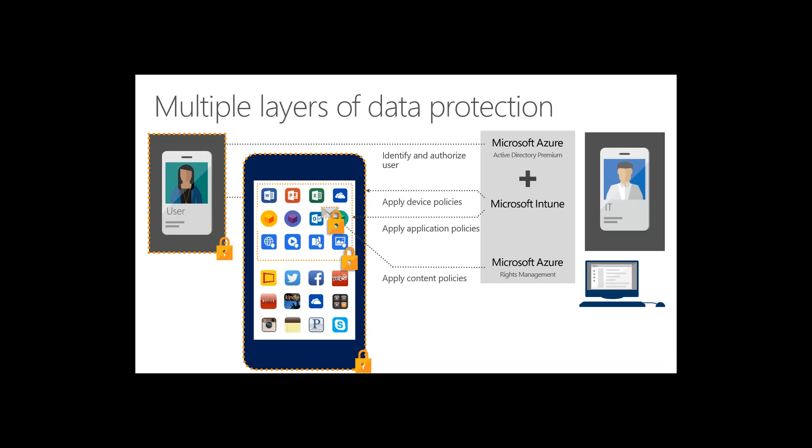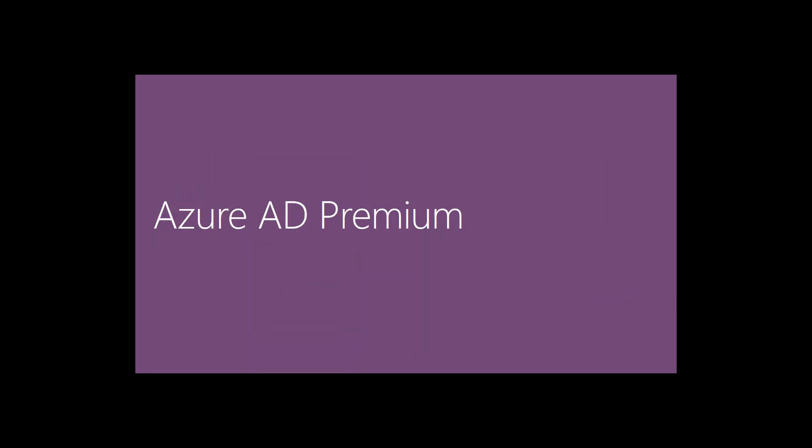With Azure Rights Management you can protect a document no matter where it lives. If it is attached and sent to an incorrect recipient, Azure Rights Management will encrypt the document and ensure that unauthorized users cannot open it without appropriate authorization. When you combine Azure AD Premium, Intune, and Azure Rights Management and add Advanced Threat Analytics, you get the Enterprise Mobility Suite. These products can be purchased standalone but the value is purchasing them together as a suite.